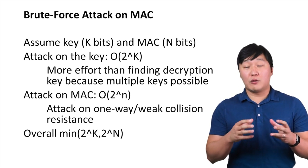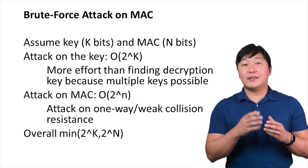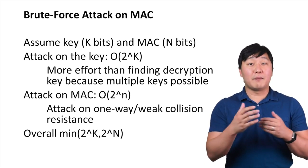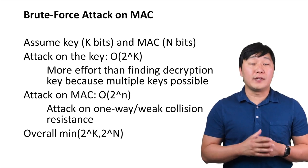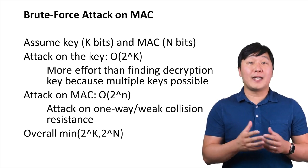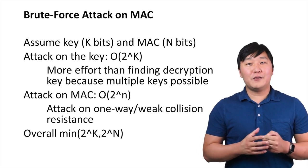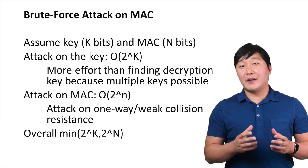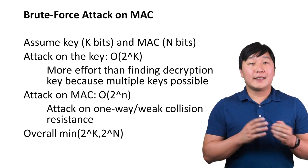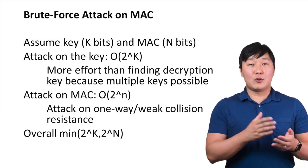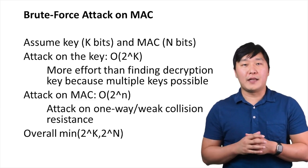Given these two threat vectors, the attacker will choose either the key or the MAC, choosing the one that has lower entropy and is therefore computationally easier to attack. Therefore, the attacker effort becomes the minimum between the two threats — that is, the minimum between 2 to the kth power and 2 to the nth power.